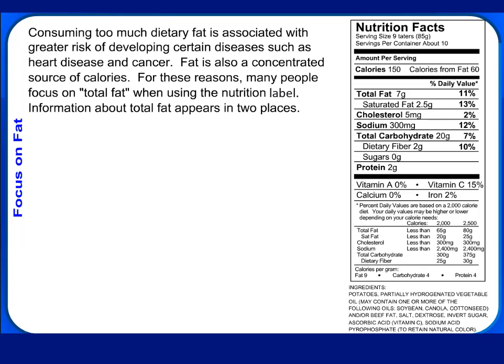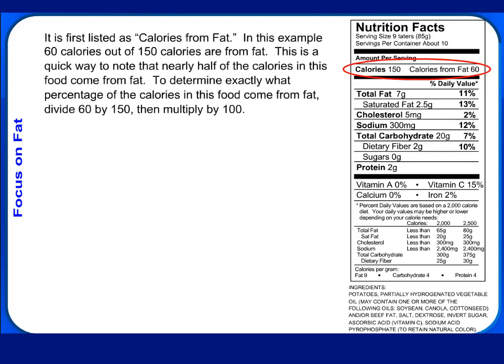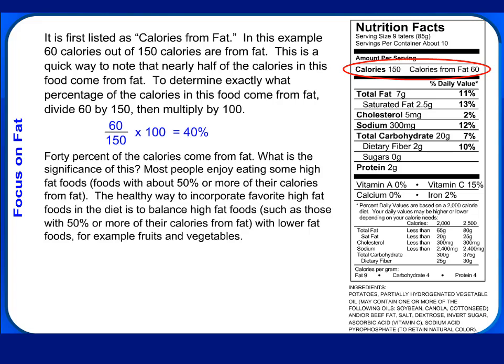Consuming too much dietary fat is associated with greater risk of developing certain diseases, such as heart disease and cancer. Fat is also a concentrated source of calories. For these reasons, many people focus on total fat when using the nutrition label. Information about total fat appears in two places. It is first listed as calories from fat. In this example, 60 calories out of 150 calories are from fat. This is a quick way to note that nearly half of the calories in this food comes from fat. To determine exactly what percentage of the calories in this food comes from fat, divide 60 by 150, then multiply by 100.